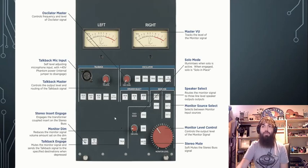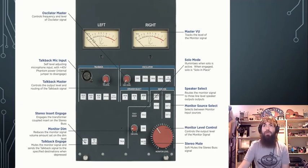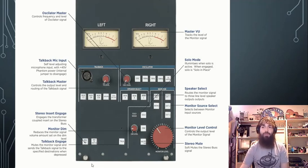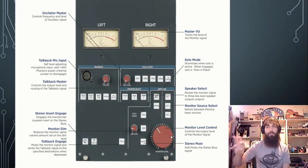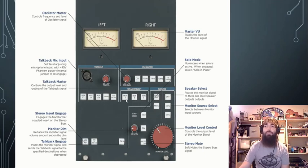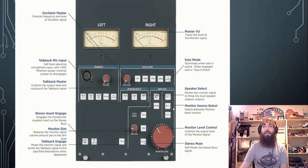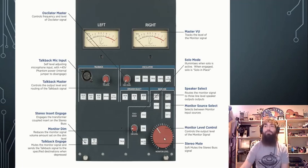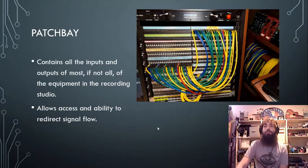This is the master section of the Neve console that we're going to have in our main control room at the new campus. Within this master section we can find VU meters, our master volume controller — the monitor level, which is post the master fader — the talkback section where we plug in a mic and select which output it goes to, and speaker selection for sets A, B, or C. There are also additional external input sources so you can plug in a recording device output and listen to it directly without it taking up a full channel.